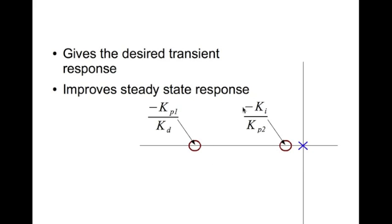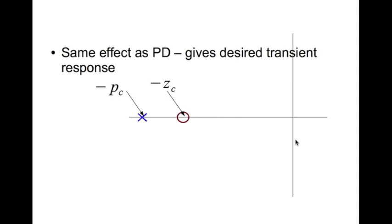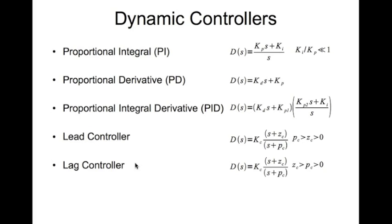The next dynamic controller is the lead controller, which behaves similarly to a PD controller — you use it to bend the root locus and achieve transient requirements. Its transfer function is kc times (s + zc) divided by (s + pc), where zc is the location of the zero and pc is the location of the pole. The zero zc is closer to the imaginary axis than the pole pc.